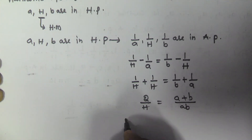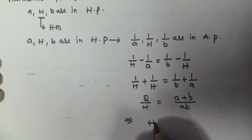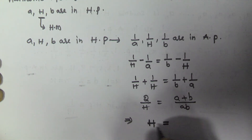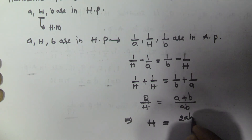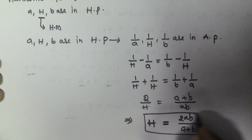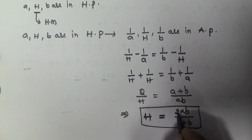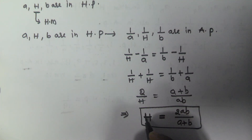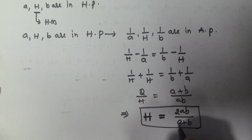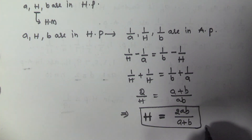From this equation we get the harmonic mean h equal to 2ab / (a + b). So whenever two numbers a and b are given in harmonic progression, their harmonic mean is given by 2ab / (a + b). I hope you got this. Thank you very much for watching this video, and please subscribe to my channel.